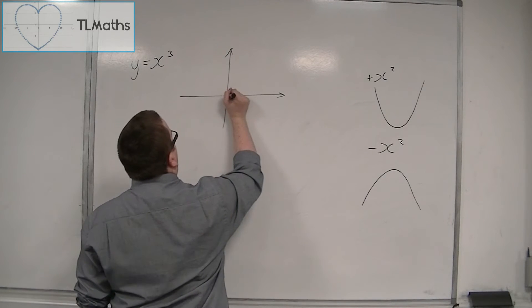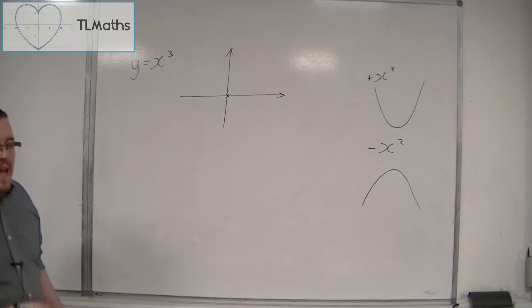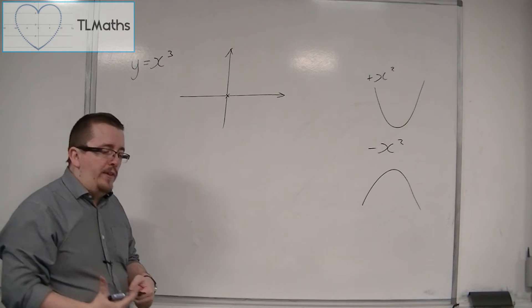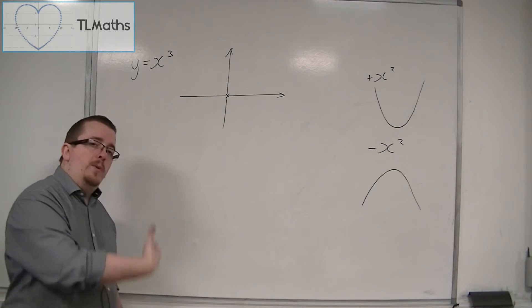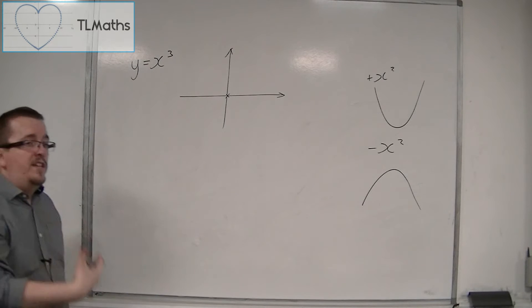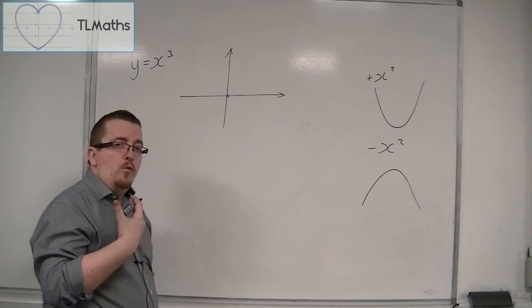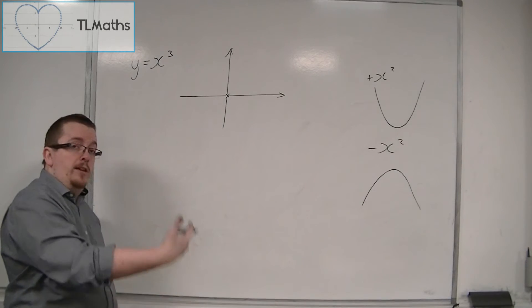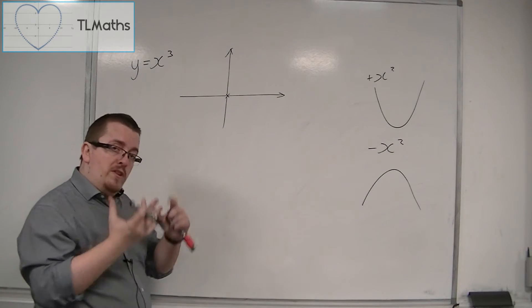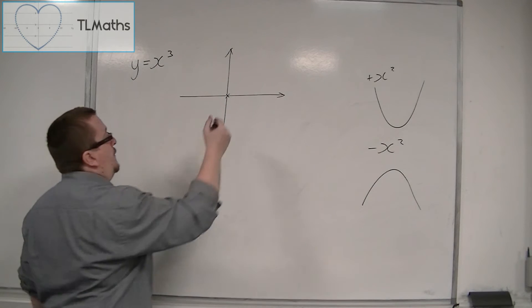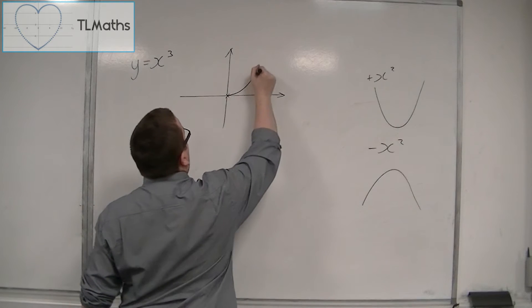And as x increases, so x is 1, x is 2, x is 3, we're going to get 1 cubed, 2 cubed, 3 cubed, so 1, 8, 27. So it increases fairly quickly. And so the curve must look something like this.